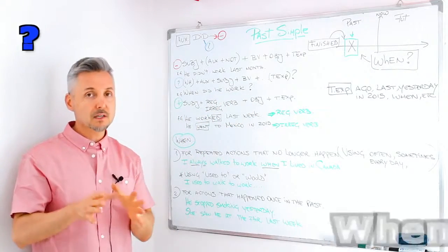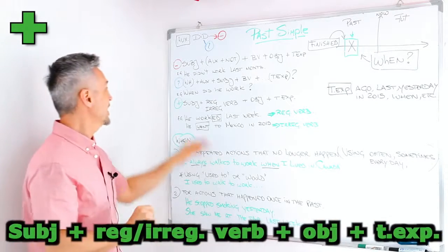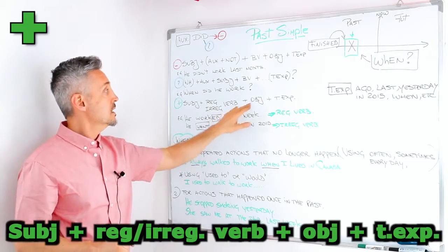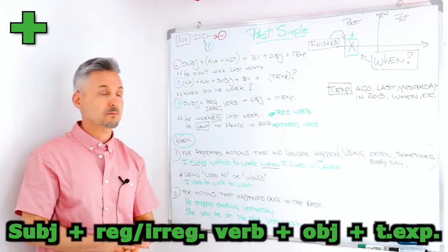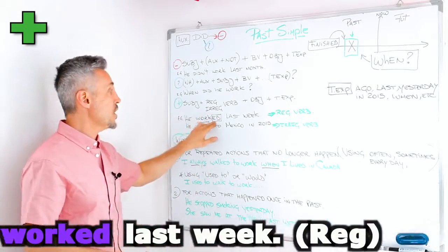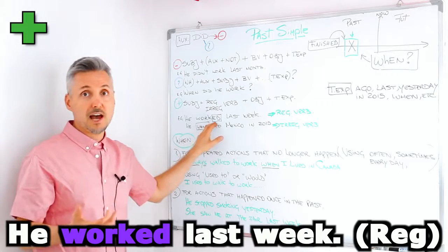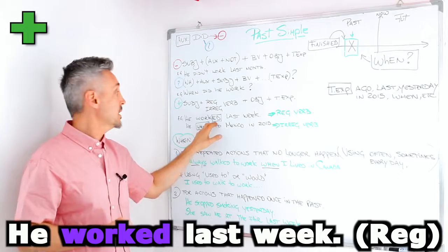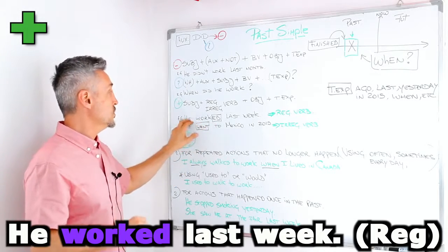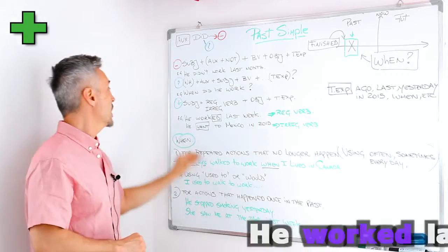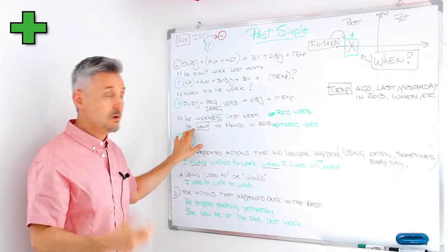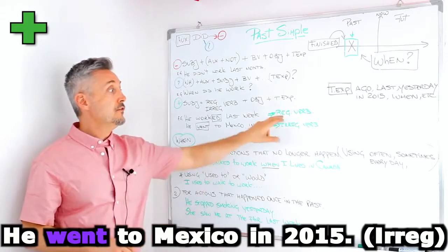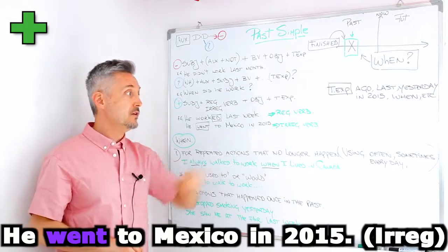If you want to make a positive sentence, this is what you have to study: the subject, then the regular or irregular verb — I'll get to that in a moment — then the object, and then the time expression. For example, 'He worked' — this is a regular verb; you may check your dictionary to see if a verb is irregular or regular. So 'he worked last week' is a regular verb. Another example with an irregular verb: 'He went to Mexico in 2015.' If you want to watch a lesson on regular and irregular verbs, you may click here.